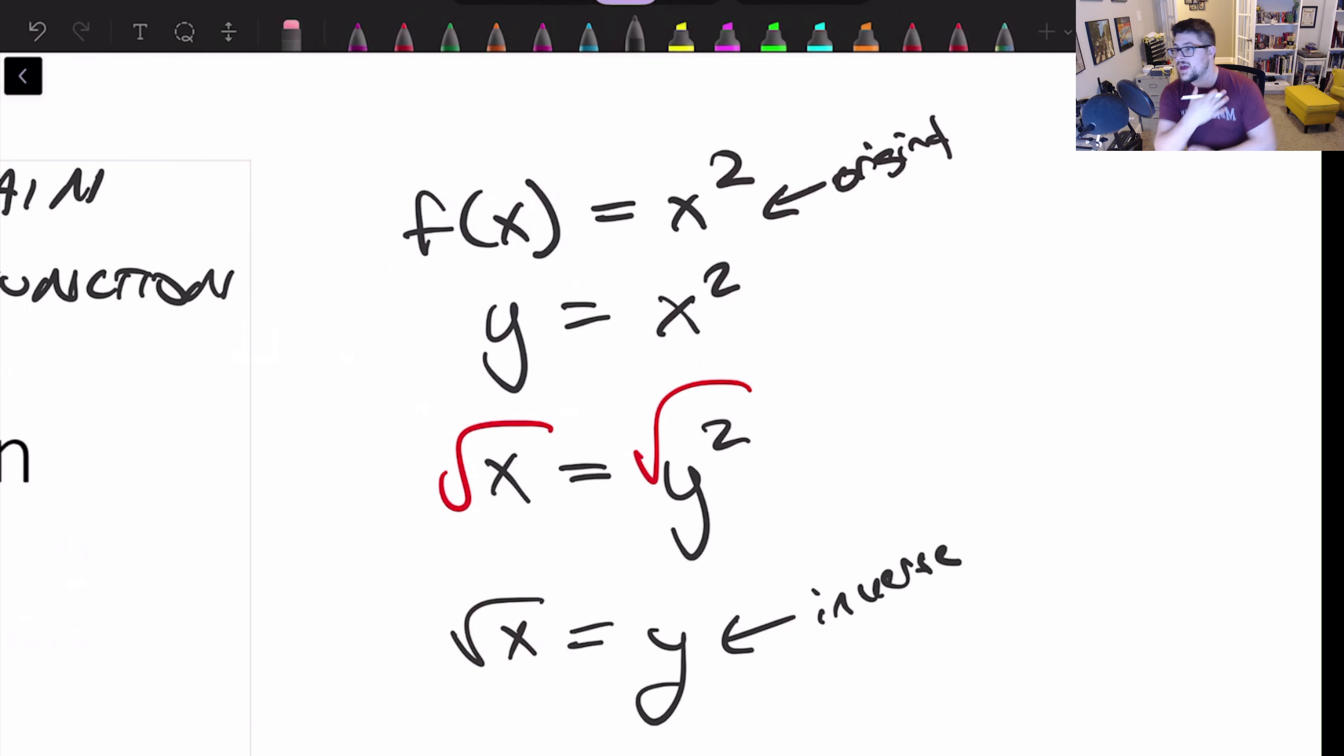So the f of x or y equals x squared is our original. And we'll say that this square root of x is our inverse. Now, one of the other properties that we covered whenever we inverse a function is that it's reflected over a particular axis. It's reflected over y equals x.